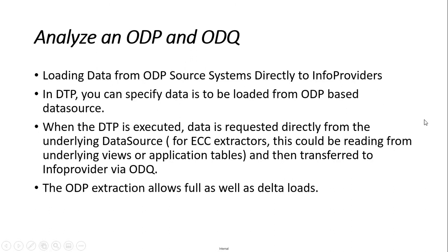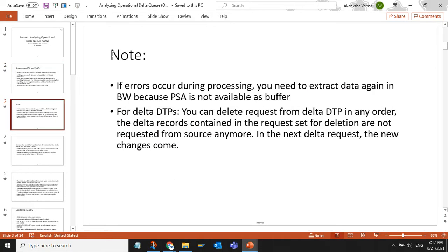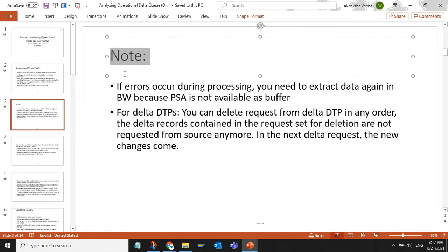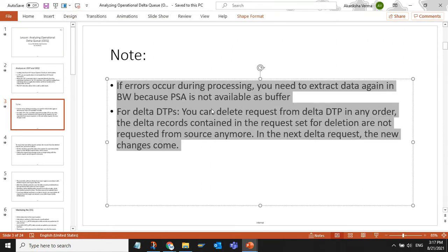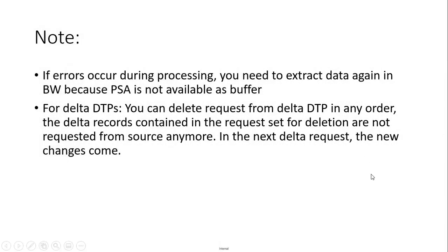The ODP extraction allows full as well as delta loads. Note: if errors occur during processing, you need to extract data again in BW because PSA is not available as a buffer. For delta DTPs, you can delete a request from the delta DTP in any order — the delta records contained in the request set for deletion are not requested from the source anymore. In the next delta request, the new changes come.